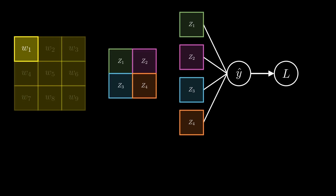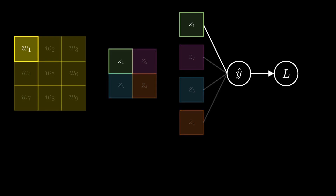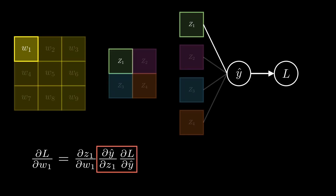Let's simplify things further and look at one z value at a time, starting with z1. Our objective is to calculate the partial derivative of the loss with respect to w1. A derivative is basically a term to measure the rate of change. We know that a change in w1 will cause z1 to change. To measure the rate of change in z1 once w1 changes, we can calculate the partial derivative of z1 with respect to w1. A change in z1 will in turn cause y-hat to change — to measure this rate of change we take the partial derivative of y-hat with respect to z1. The change in y-hat will cause a change in the loss, so we take the partial derivative of the loss with respect to y-hat. The last term of this equation can be simplified to the partial derivative of the loss with respect to z1.